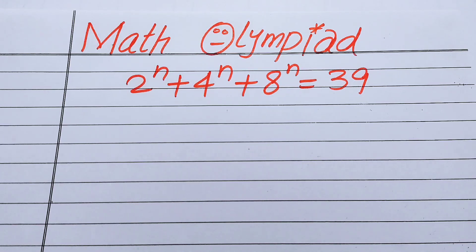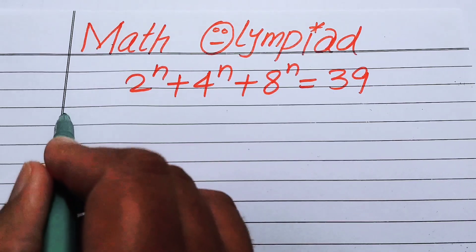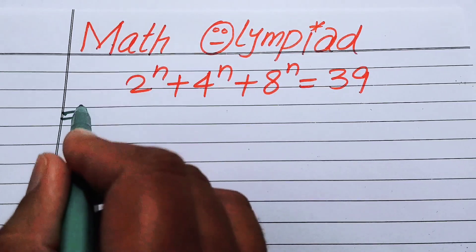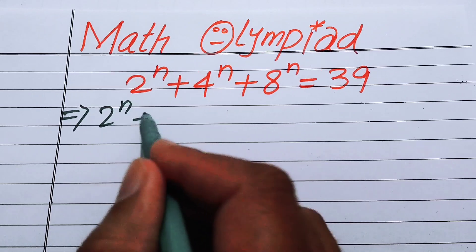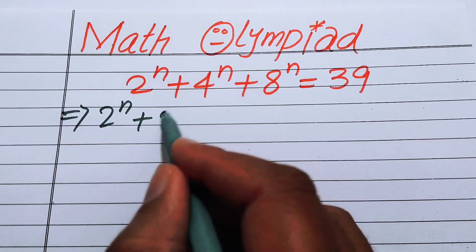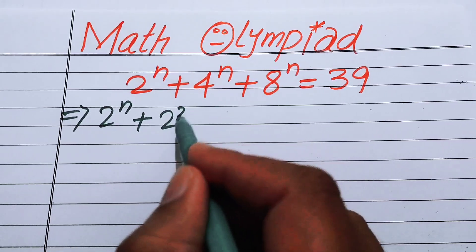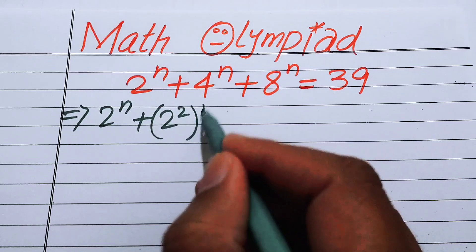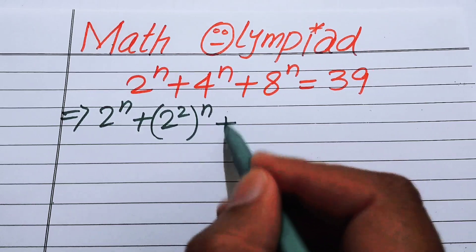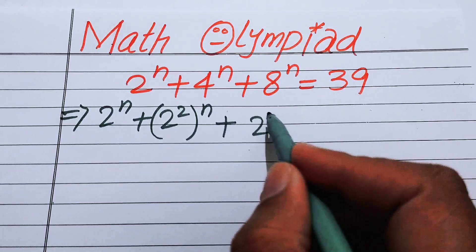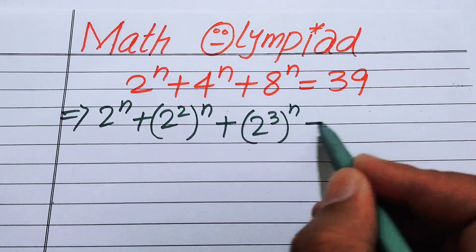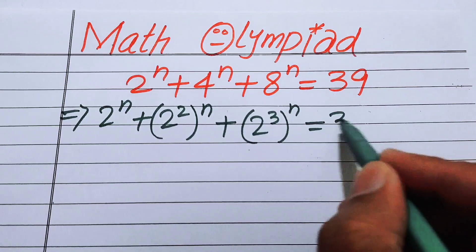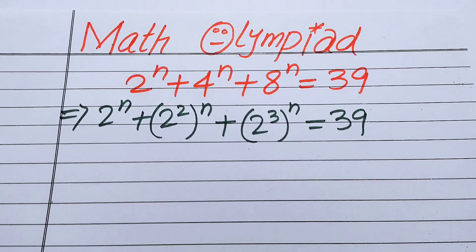The very first thing we are going to do is rewrite this equation. We write 4 as 2 squared and 8 as 2 cubed, each raised to the power n, so the equation becomes 2^n plus (2²)^n plus (2³)^n equals 39.